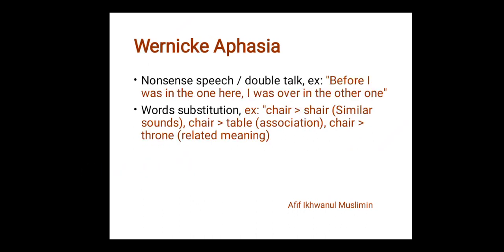The next type of aphasia is Wernicke's aphasia. As you know, Wernicke's area is the part of the brain used to comprehend information or input. Someone who suffers from this tends to produce nonsense speech or double talk, like: 'Before I was in the one here, I was over in the one there, or in the other one.' They receive wrong input, so they think what they say is correct, but it is not.